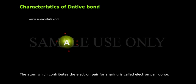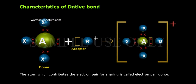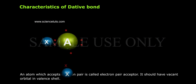The atom which contributes the electron pair for sharing is called the electron pair donor. The donor atom must have at least one pair of electrons in its valence shell.